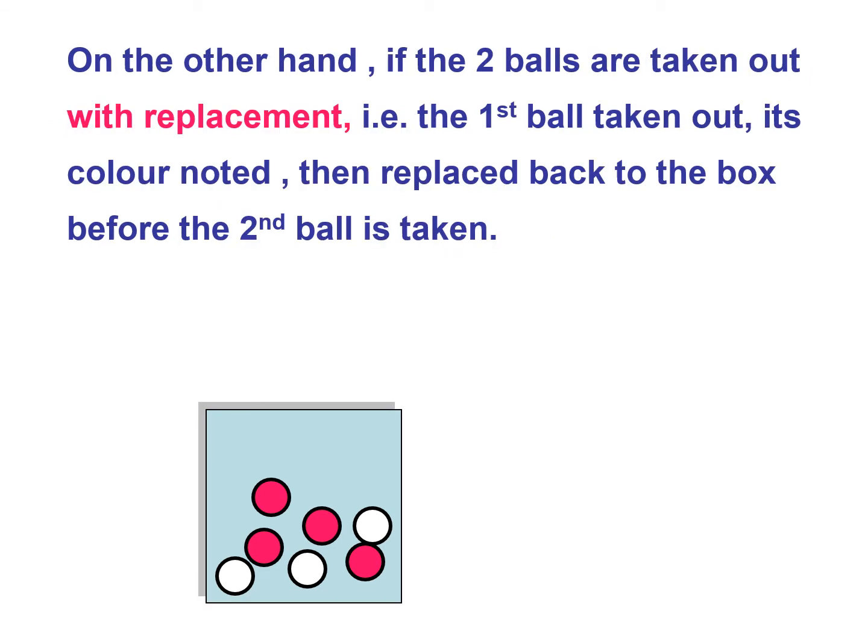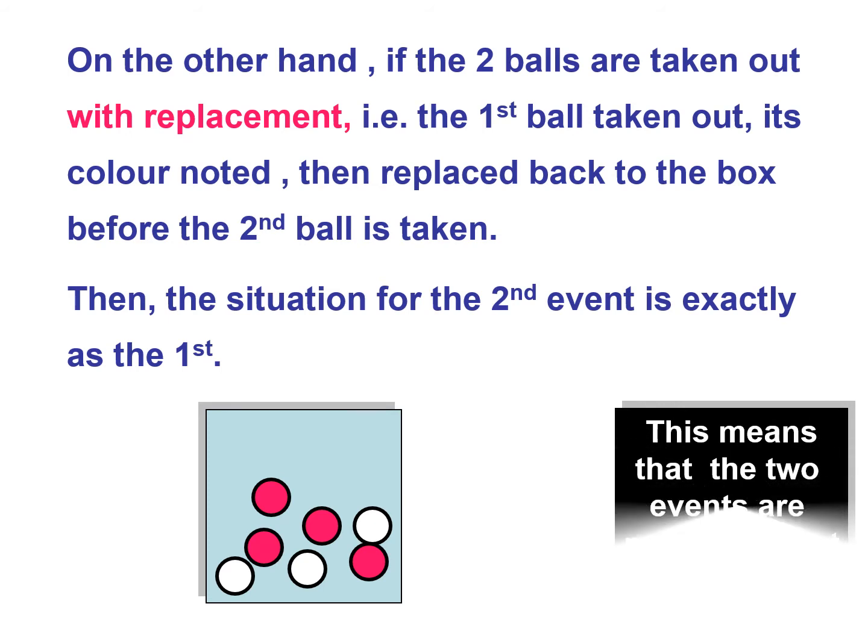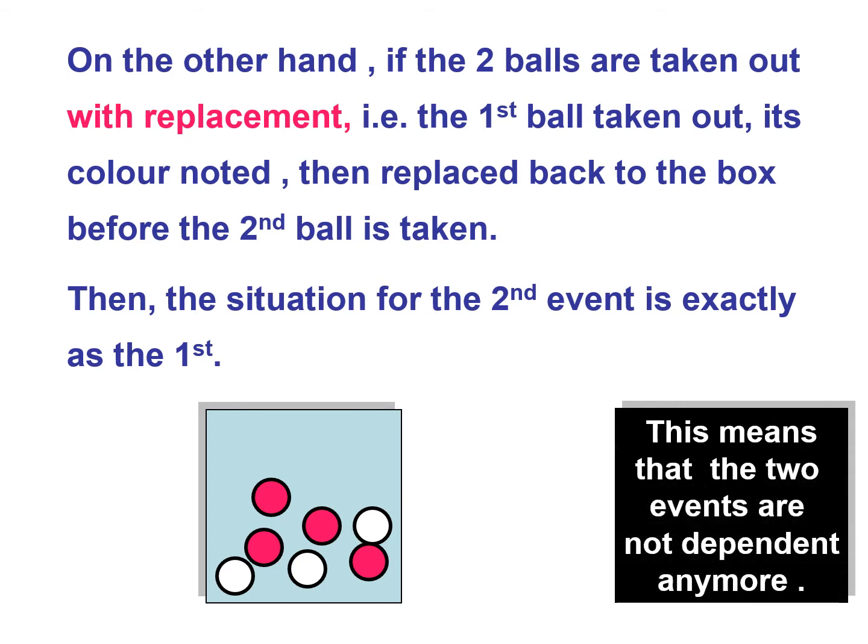On the other hand, if two balls are taken out with replacement, for example, the first ball taken out, its color is noted, then replaced back to the box before the second ball is taken. Then the situation for the second event is exactly as the first. This means that the two events are not dependent anymore.